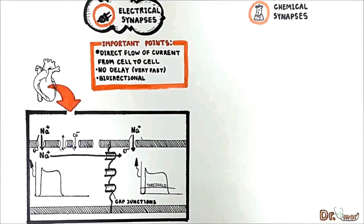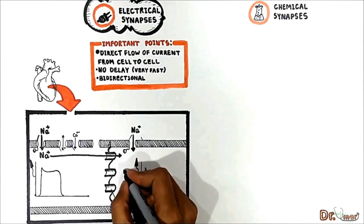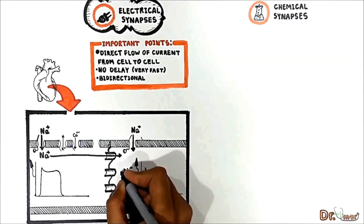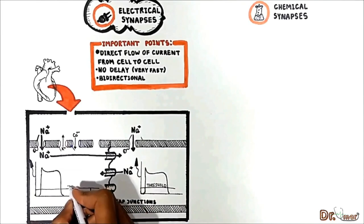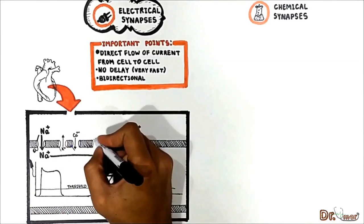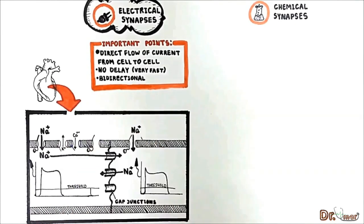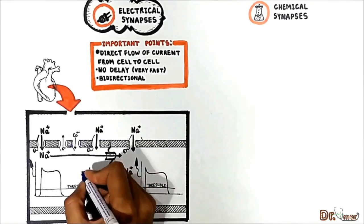What this means is if current flows backward from a second cell to the first cell it depolarizes the cell up to the threshold and this opens voltage-gated sodium channels and we generate an action potential.